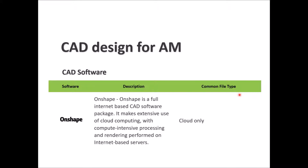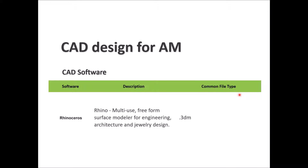OnShape is a cloud-based software with no local file extension, being a fully internet-based CAD software package. It uses cloud computing extensively, with computer-intensive processing and rendering performed on internet-based servers. Rhinoceros — file extension .3dm — is very good for freeform surface modeling for engineering, architecture, and jewelry design.